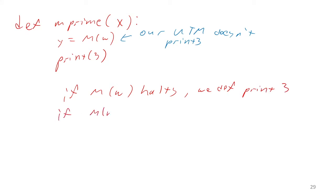If, however, M on W runs forever, we never print 3. Because this line, Y equals M on W, stopped us from ever getting to that print statement.